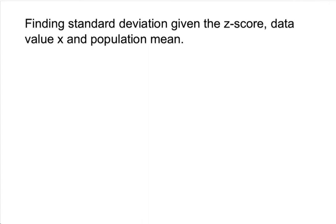If the standard deviation formula is given, like this one, you just plug in everything basically. Standard deviation is equal to data value x minus the mean over z-score. You just plug everything in and you're fine. But if this formula is not given, then how do we come up with it?